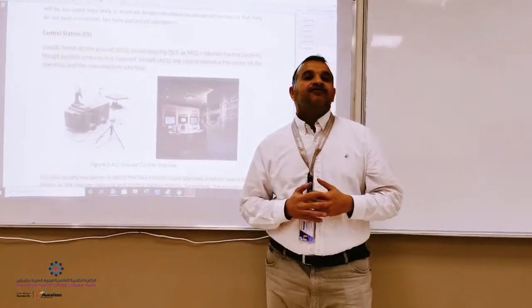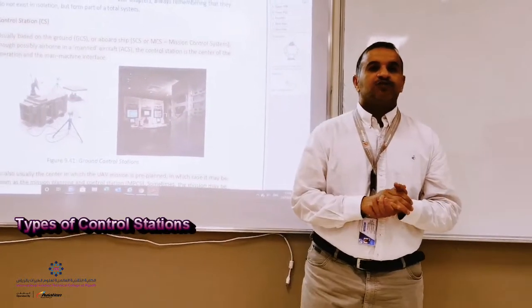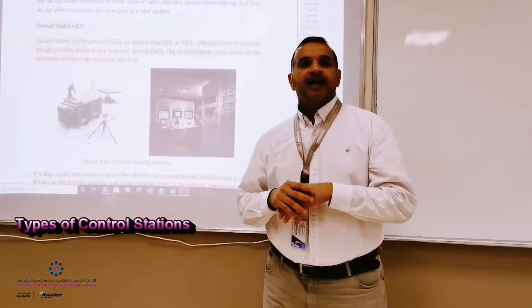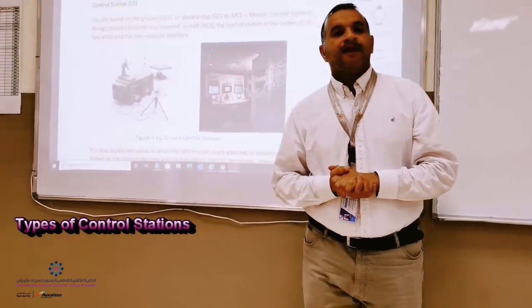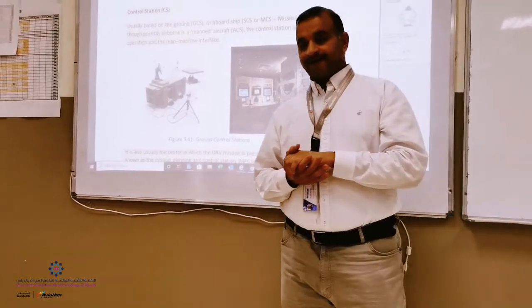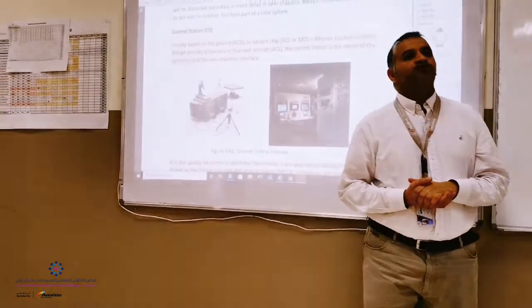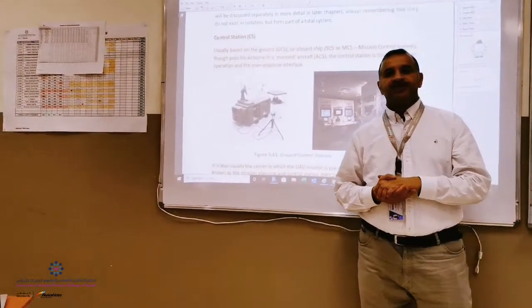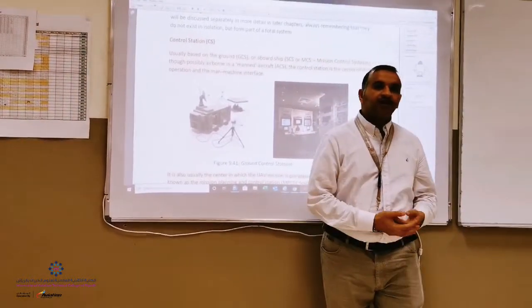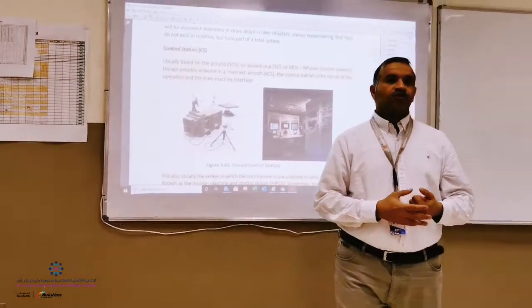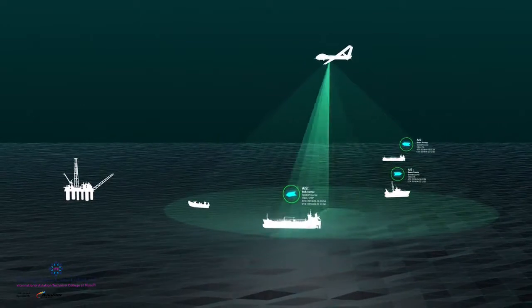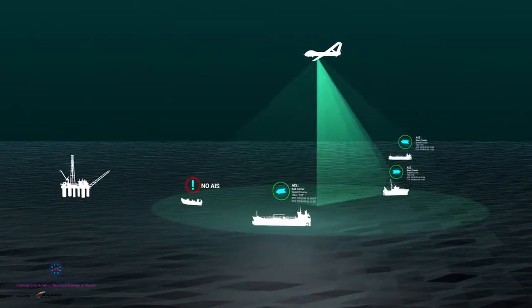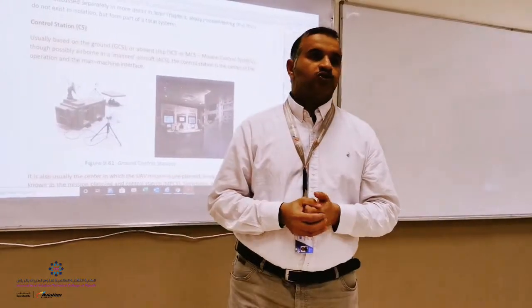There are different types of control stations. It depends on the system size and system missions. If the control station is located on ground, it's called ground control station. Control stations can also be located in ships, which is called SCS or ship control station.